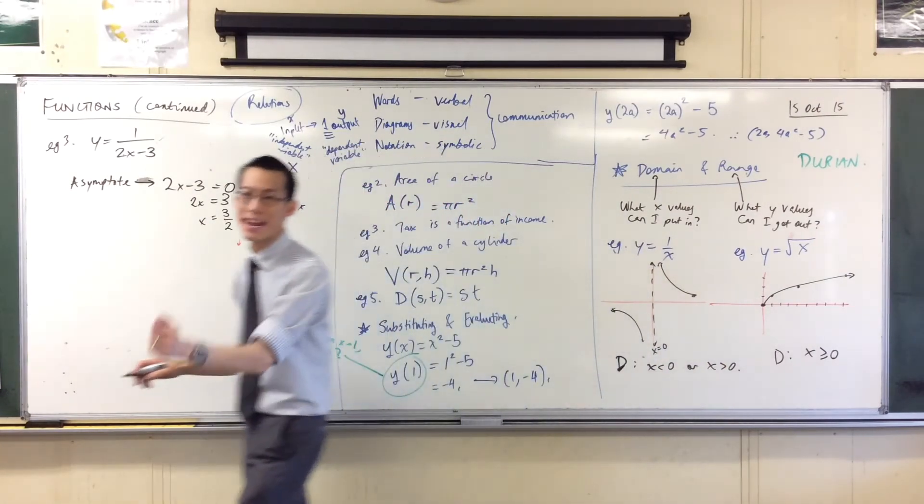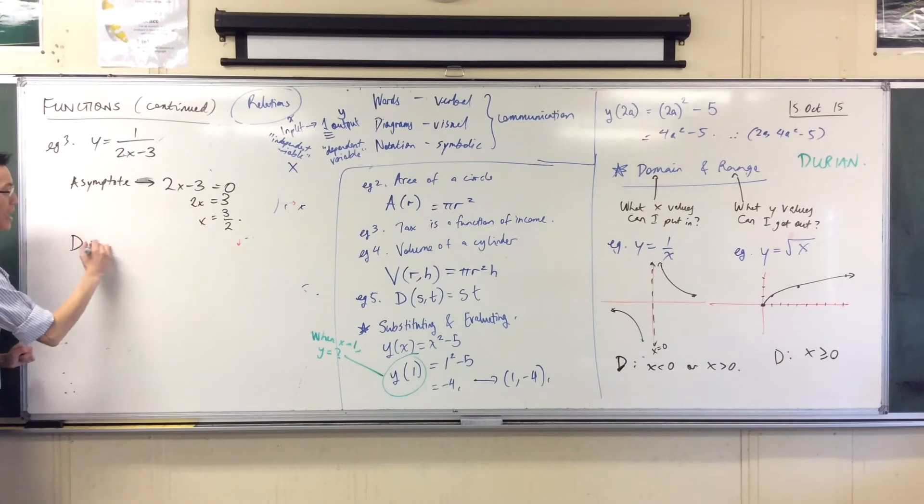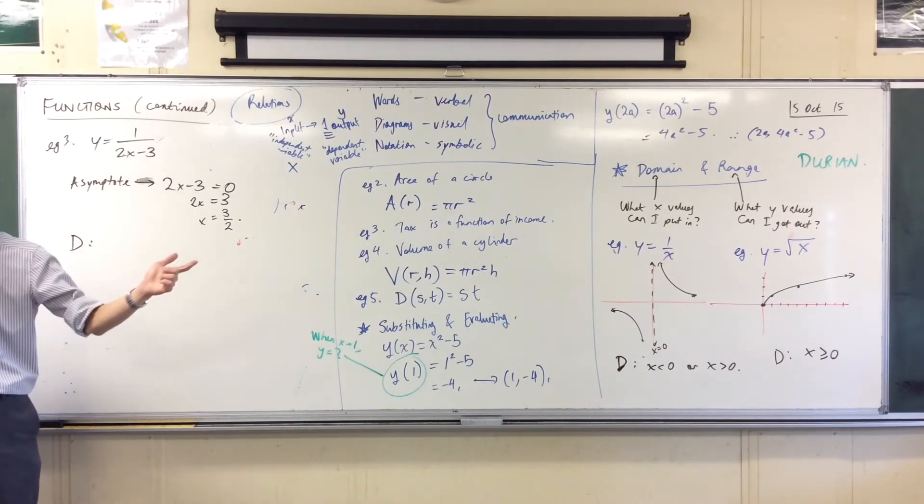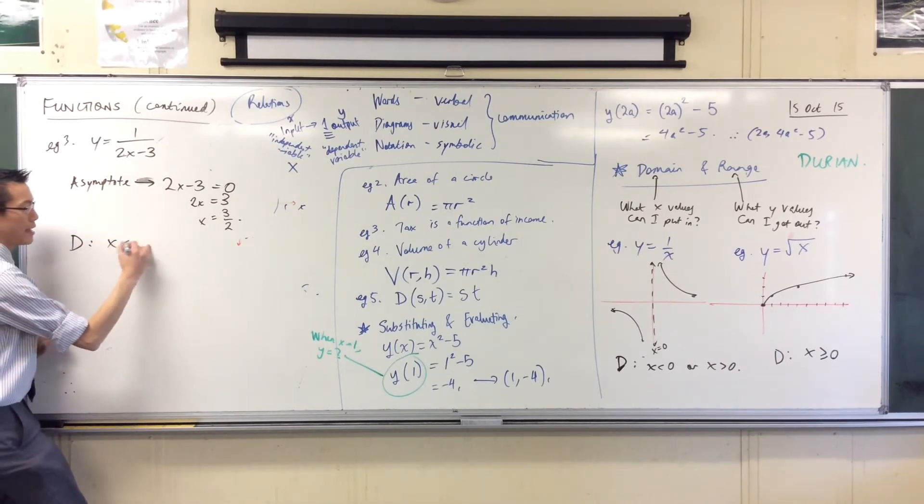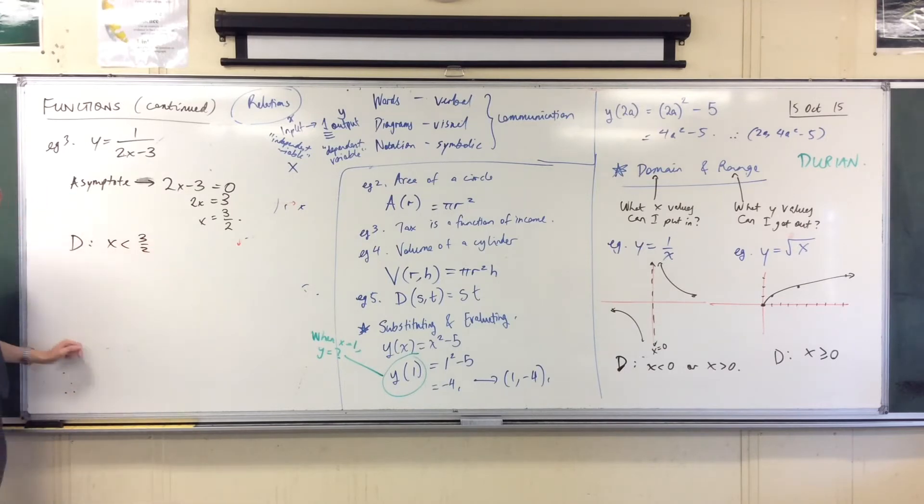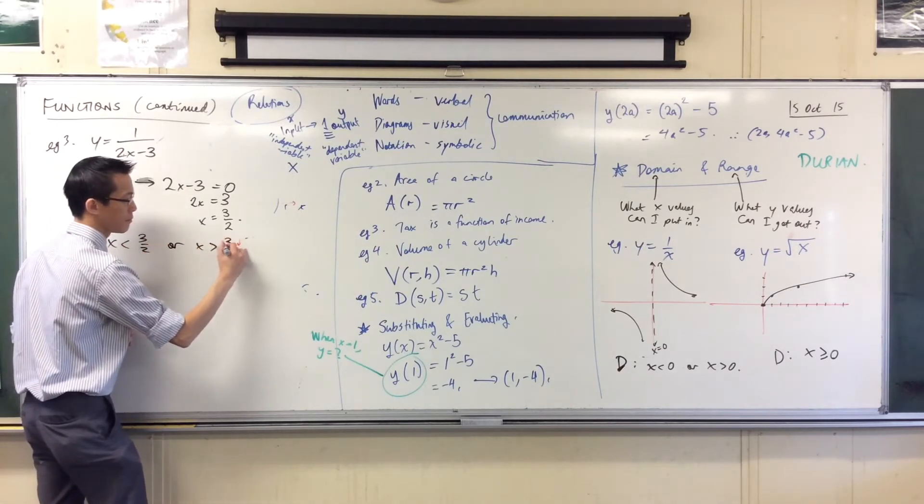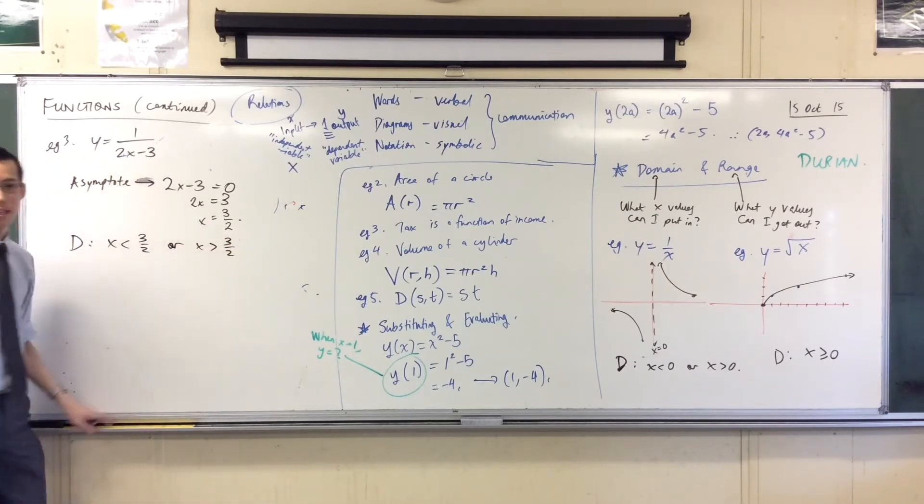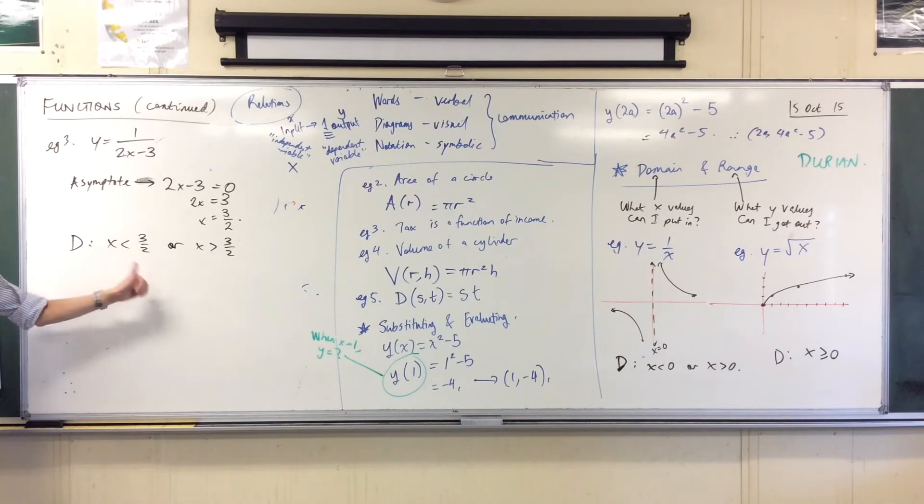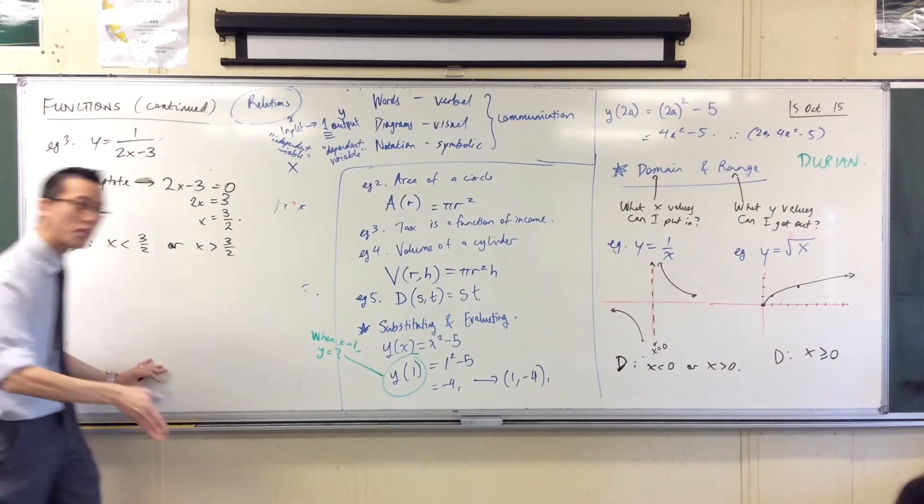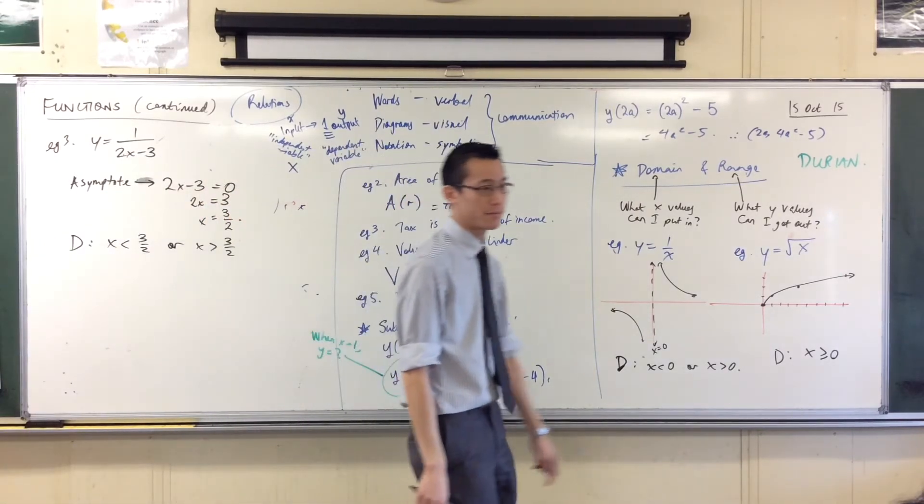Now I know where the domain is, right? The domain is everywhere else, right? I can be less than the asymptote to the left, or I could be to the right. Do you see that? Are you okay with that? I can be to the left, I can be to the right, I just can't be on there exactly, and I'll be fine.